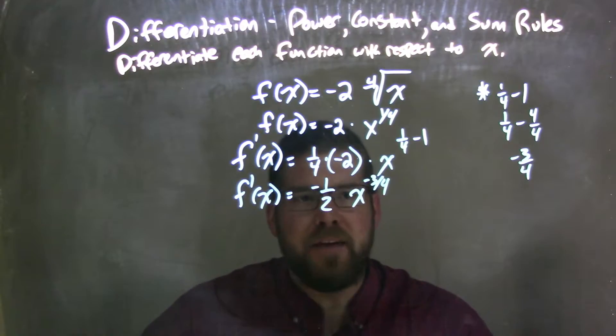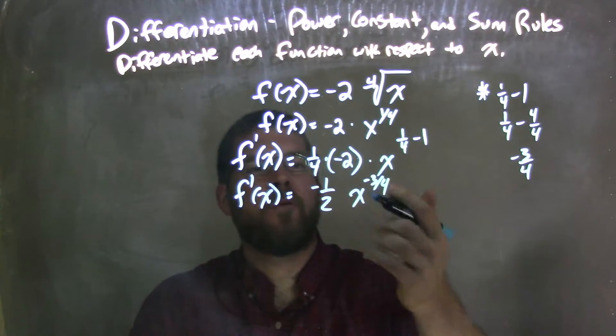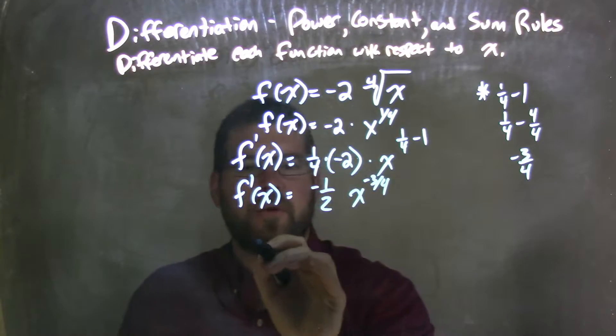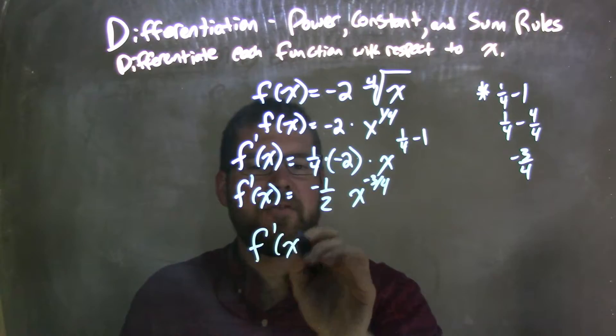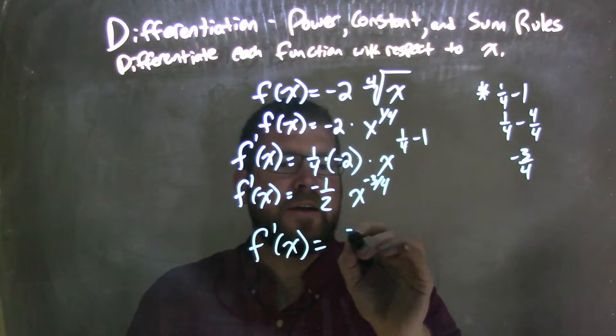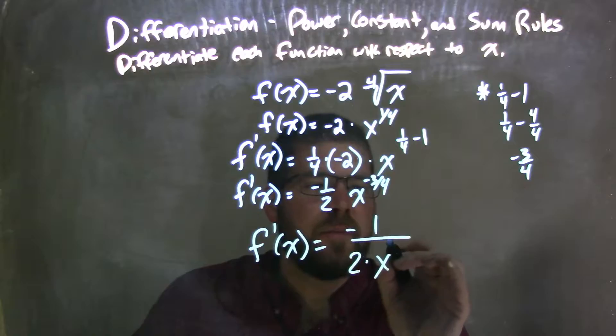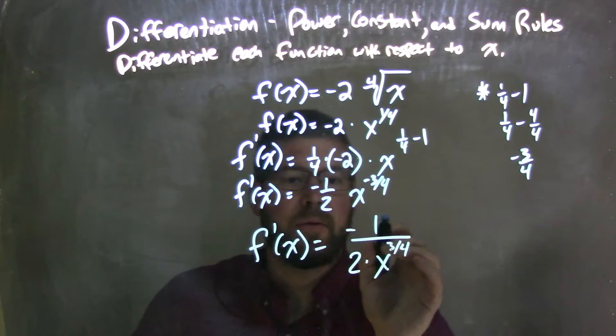I don't like having a negative exponent for my final answer. So when I rewrite this, I'm going to write that to be, x to the negative three-fourths power would be 1 over x to the positive three-fourths. So we have our final answer, f prime of x is equal to negative 1 over 2 times x to the positive three-fourths power.